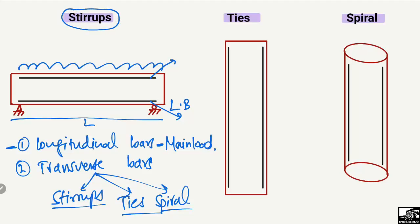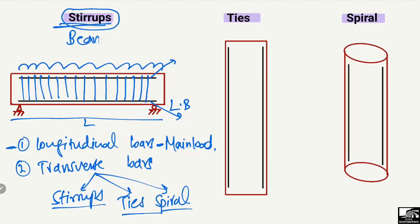The transverse reinforcement is provided perpendicular to the longitudinal bars. When transverse reinforcement is used in beams, it is known as stirrups. Stirrups serve different purposes: they confine the concrete, make a bond between the concrete and the steel reinforcement, provide resistance to shear forces, and also provide earthquake load resistance. They are mostly provided to increase the lateral capacity of the beam.